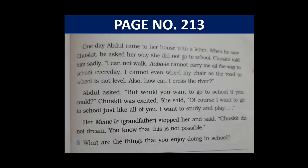One day, Abdul came to her house with a letter. When he saw Chuskit, he asked her why she did not go to school. Chuskit told him sadly, 'I cannot walk. Abale cannot carry me all the way to school every day. I cannot even wheel my chair as the road to school is not level. How can I cross the river?' Abdul asked, 'But would you want to go to school if you could?' Chuskit was excited. She said, 'Of course I want to go to school just like all of you. I want to study and play.' Her Memele — grandfather — stopped her and said, 'Chuskit, do not dream. You know that this is not possible.'